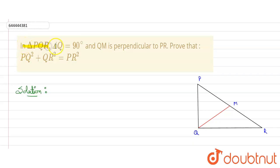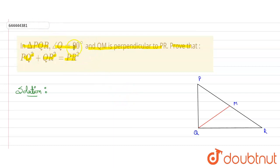In this question, it is given that in triangle PQR, angle Q is 90 degrees, and QM is perpendicular to PR. We need to prove that PQ² + QR² = PR². I have drawn the figure here. Angle Q is 90 degrees, and QM is perpendicular to PR, so point M is marked on PR with both angles at M being 90 degrees.